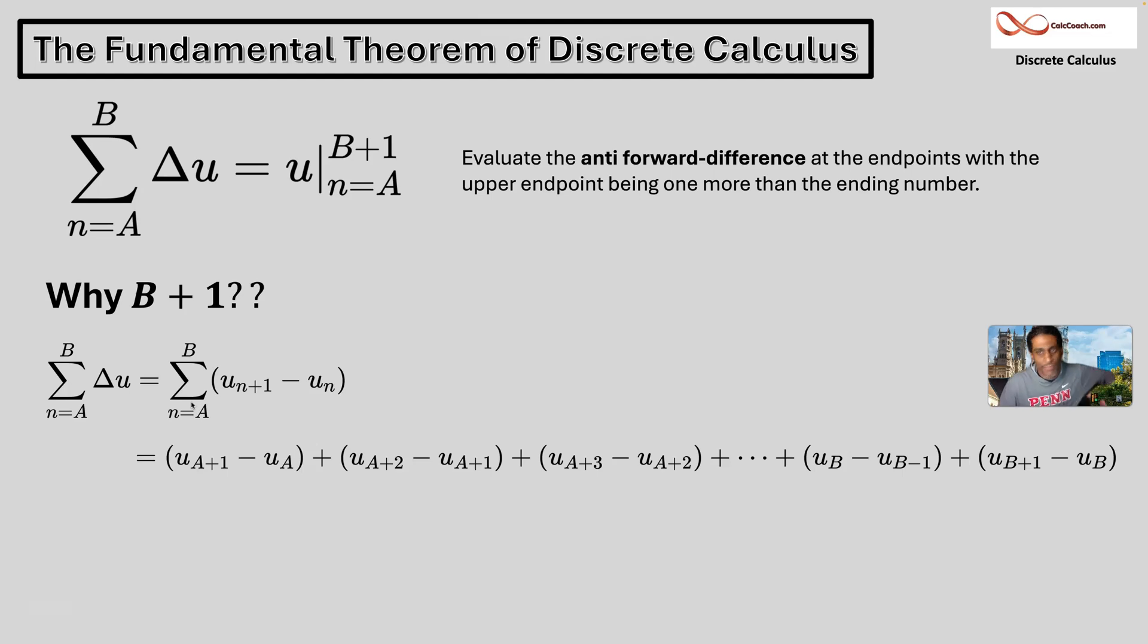Your first cancellation, U sub A plus one will cancel with the minus U sub A plus one. And then U sub A plus two is going to cancel. U sub A plus three is going to cancel, we didn't write that next term, but it's going to cancel. Who's the last term to cancel?